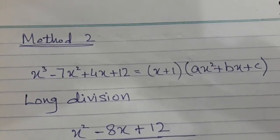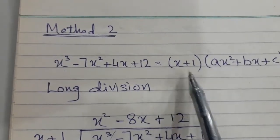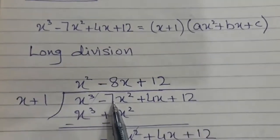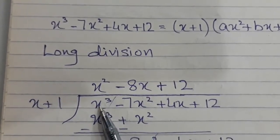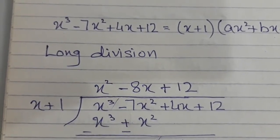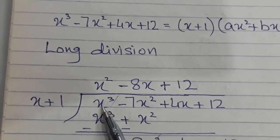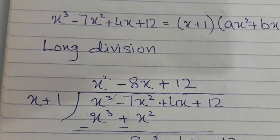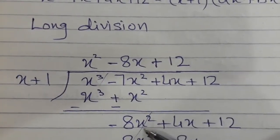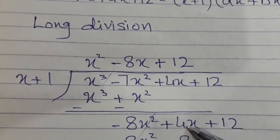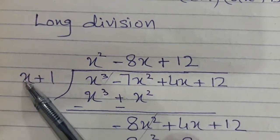Now let's solve the same quadratic factor by the second method: long division. I already have the linear factor x + 1 for this cubic function. Stepwise: to cancel the first term, x multiplied by x squared gives x cubed. Then 1 multiplied by x squared gives x squared, written under the like term. After subtracting with sign change, the x cubed terms cancel and I get minus 7 minus 1 = minus 8x squared. I bring down the remaining terms.